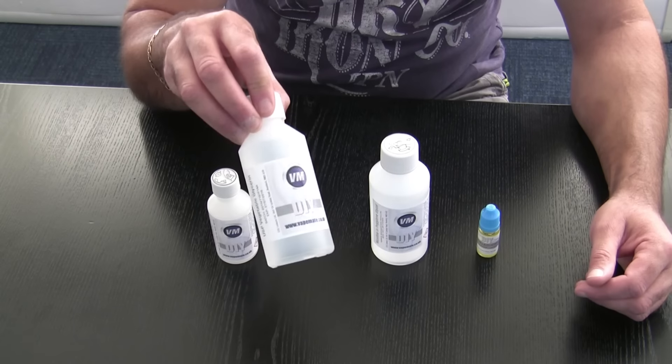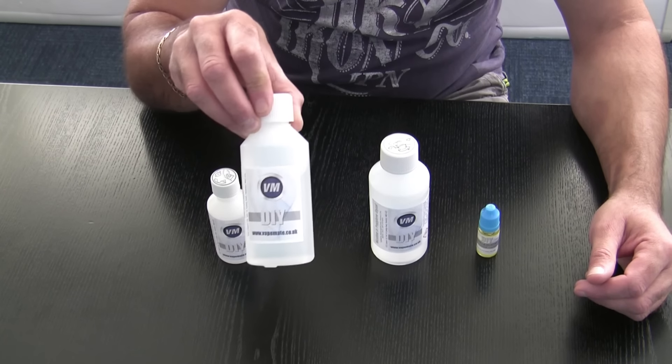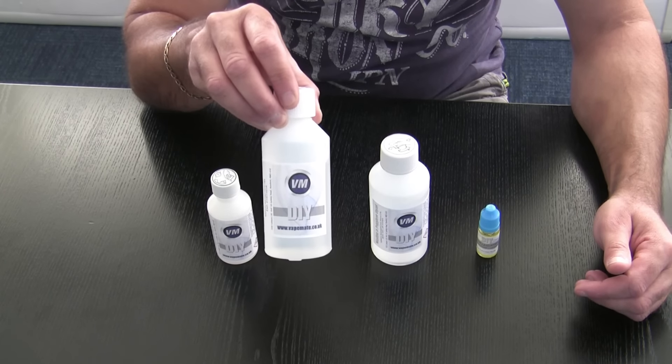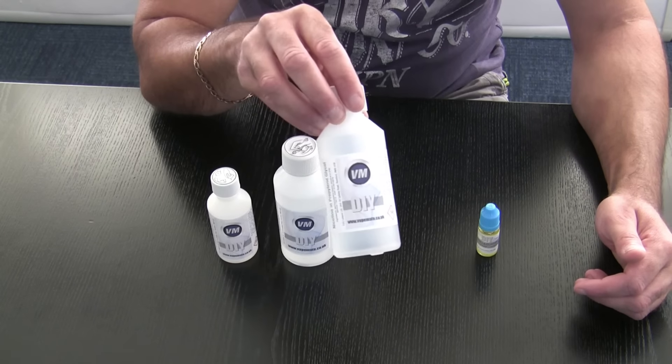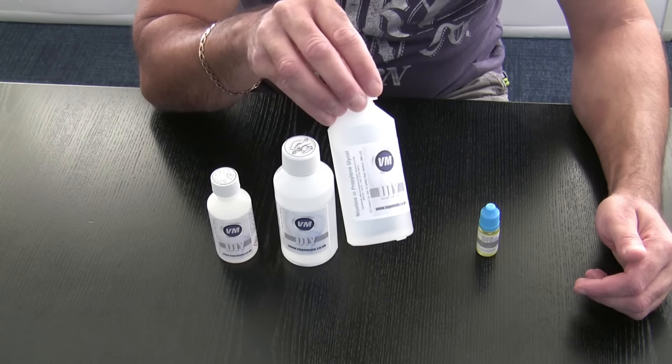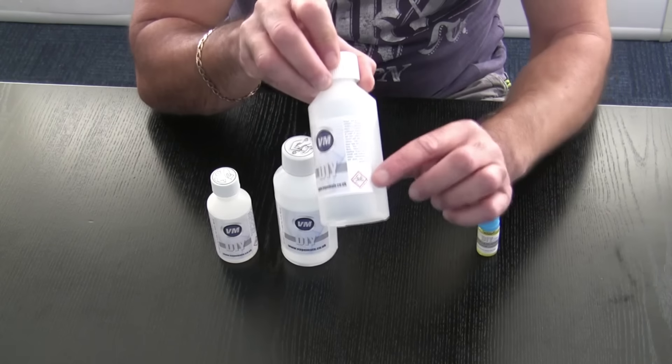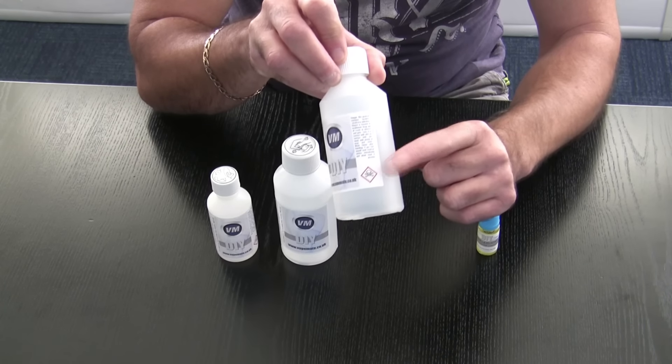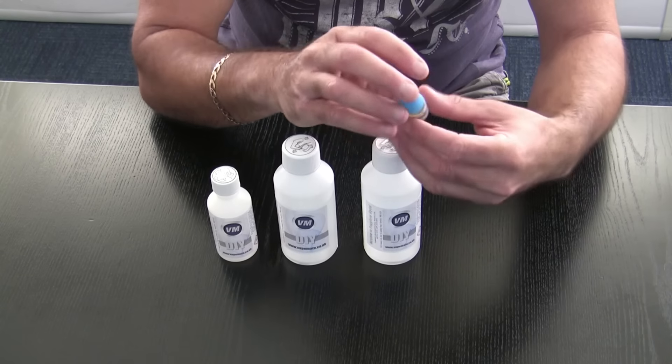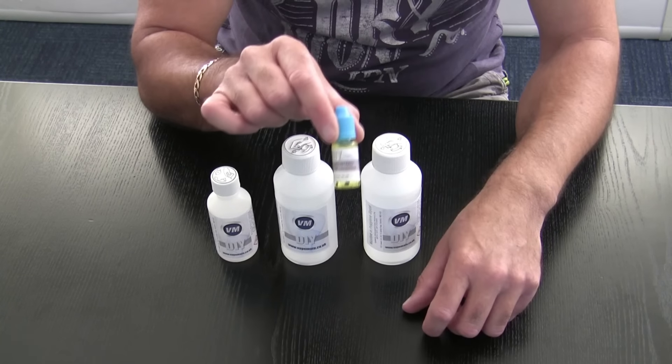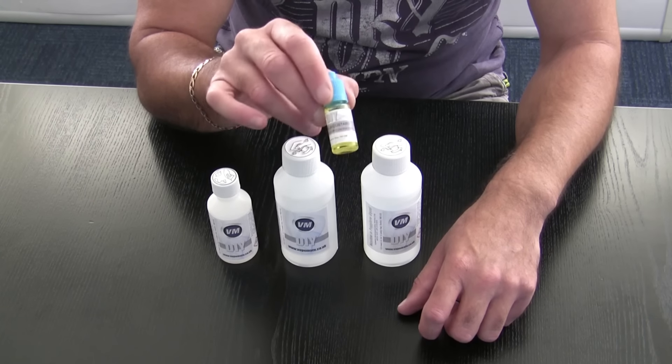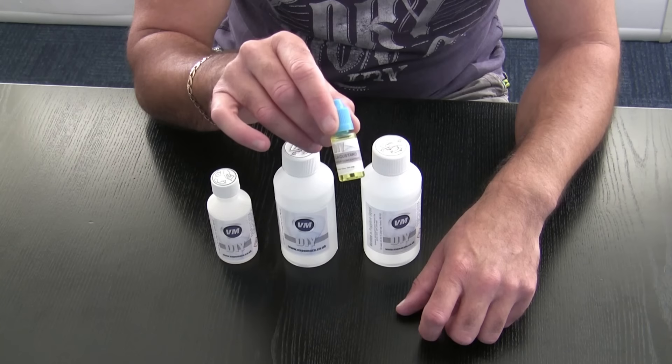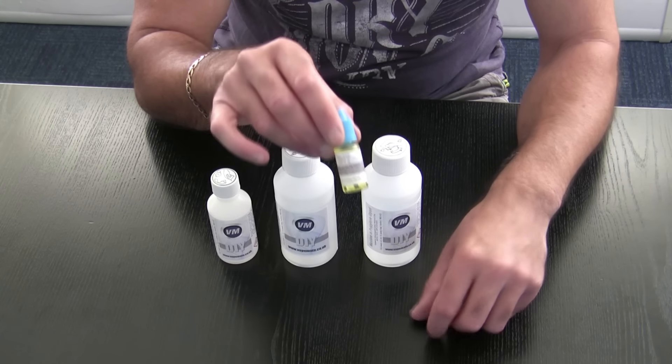Here we have a nice big bottle of VG. That's the good stuff that gives you the clouds. And then we have the PG. Another one with a little label on it, so it needs to be kept nice and safe. And then this is your flavor concentrate. This is my favorite, vanilla custard. We're going to knock up a little bottle of vanilla custard.